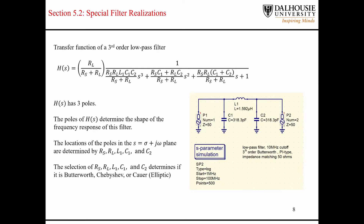This is a generic transfer function for a third-order low-pass filter. A low-pass filter only has poles — with each pole there is a corresponding decrease in the frequency response of 20 dB per decade. The way Butterworth, Chebyshev, etc. are differentiated from one another is by the coefficients on the polynomial in the denominator. These coefficients determine the filter type, and there are specific polynomials — Butterworth polynomials, Chebyshev polynomials — used in this design work.